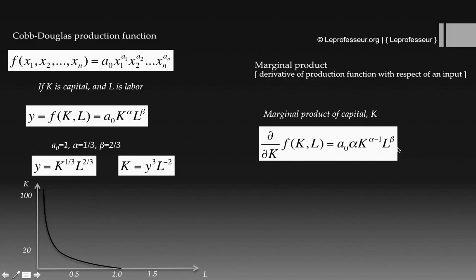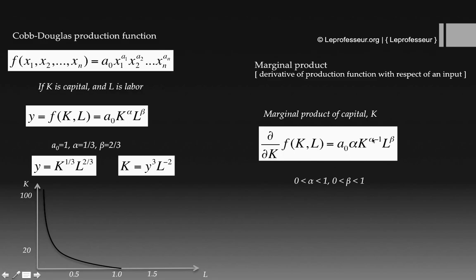For those not familiar with calculus, you may watch calculus video lectures, but for simplicity just remember this formula. We can deduce a couple of facts from this equation. If we increase capital K while not increasing labor — remember alpha is between 0 and 1, so alpha minus 1 is negative — the marginal product with respect to capital will not increase; K is in the denominator effectively. However, if you keep capital fixed and increase labor L, then the marginal product with respect to capital will increase, since L appears with a positive power.